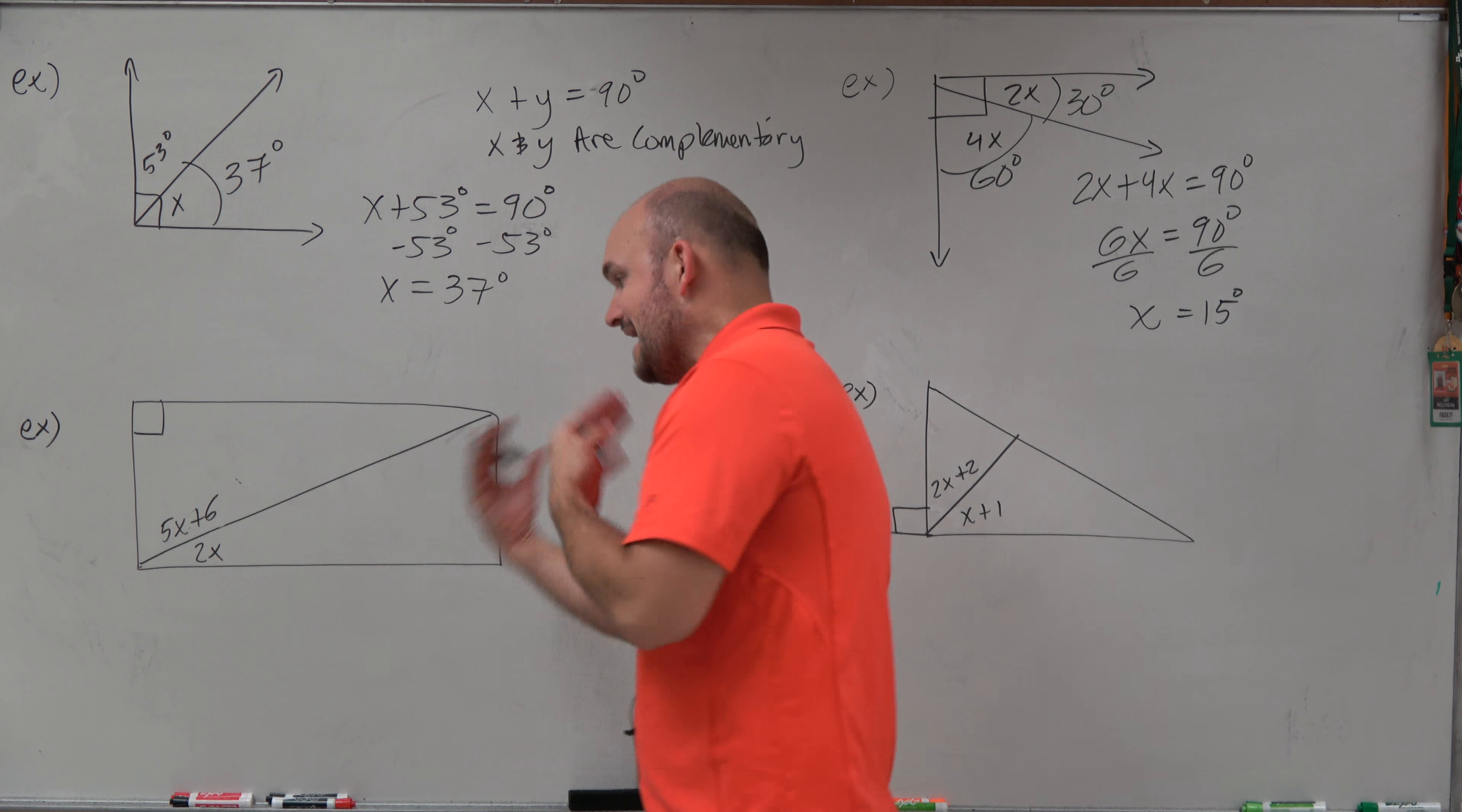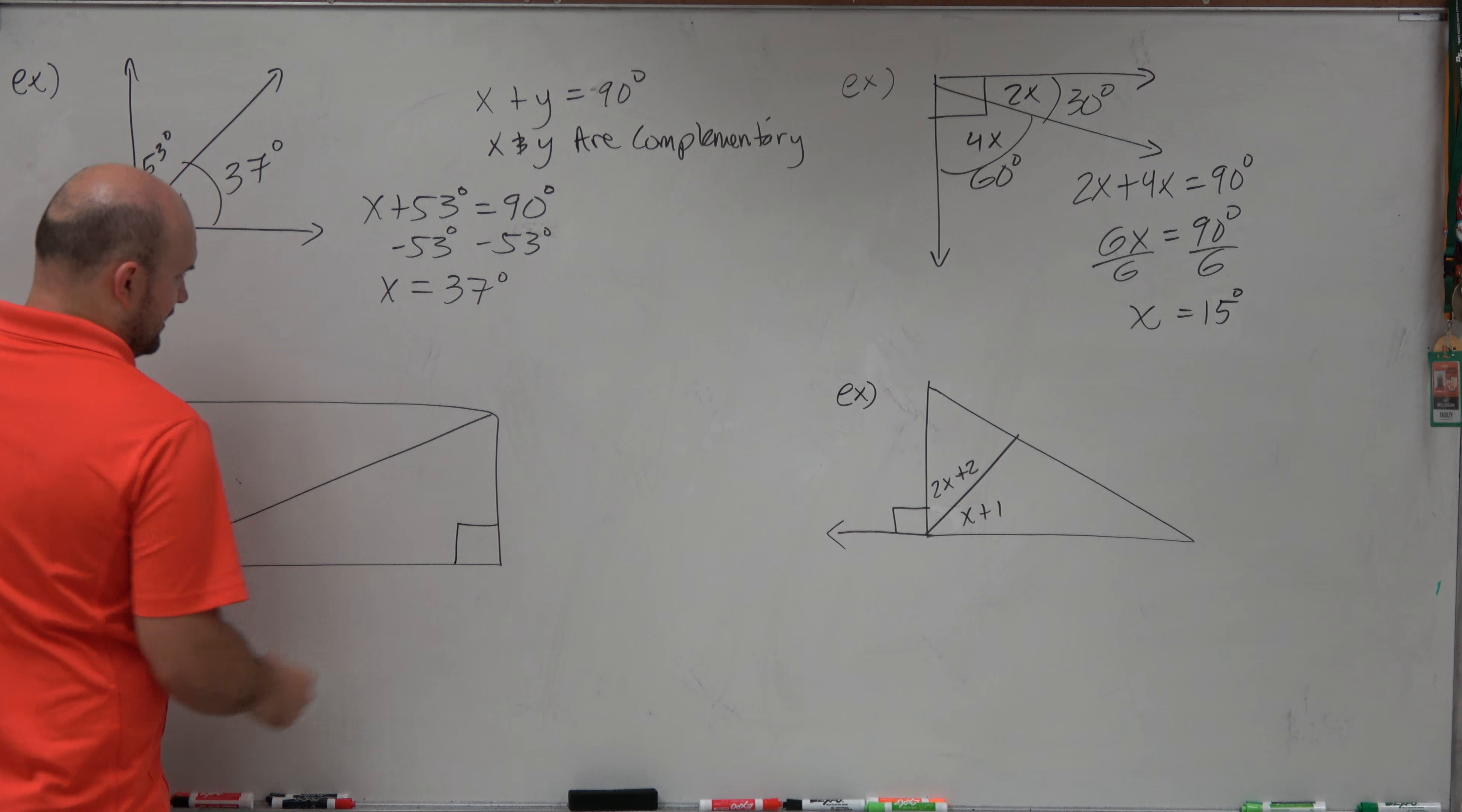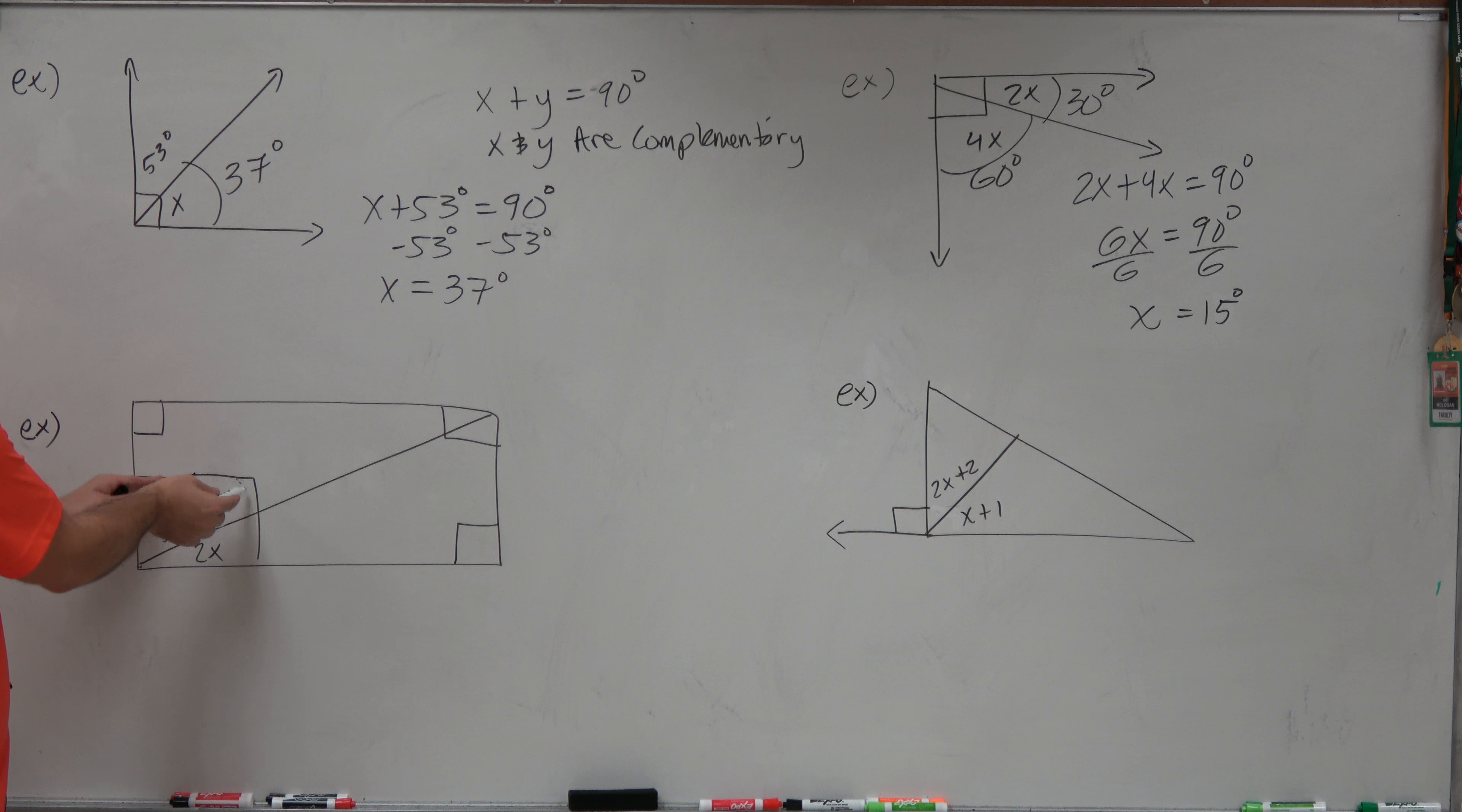Now, for these next two, it's the exact same type of problem. I just wanted to include some from figures, because I see that students can kind of get a basic understanding of adding them and setting them equal to 90. But once we get in figures, they kind of forget a lot of things. So here, we have a 90 degree angle, and if we have three 90 degree angles and we have a quadrilateral, we know that my other angle must also be 90 degrees. Therefore, these two angles are complementary.